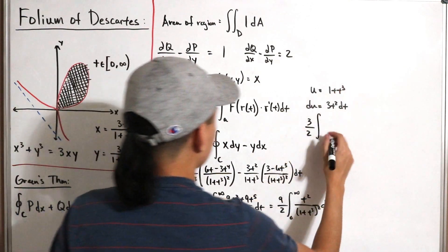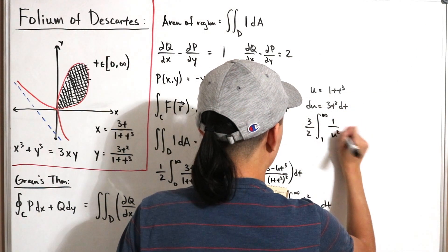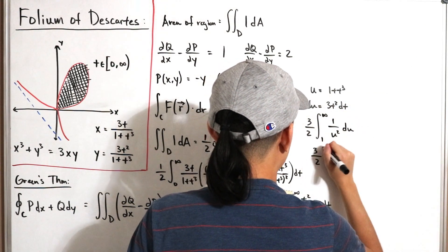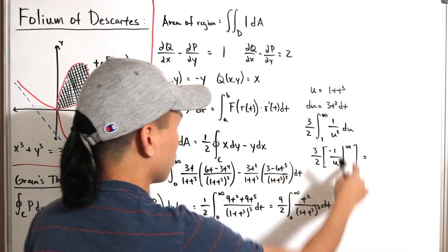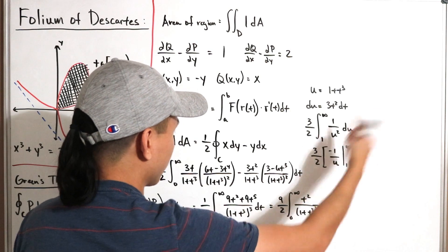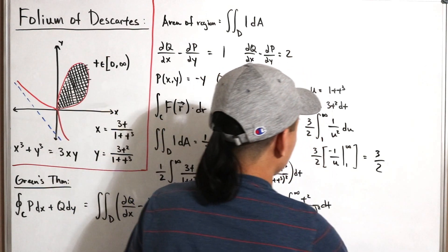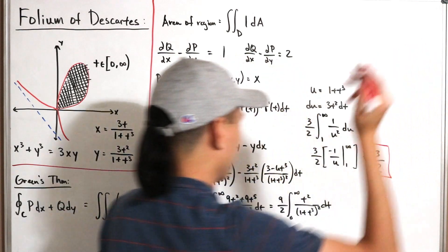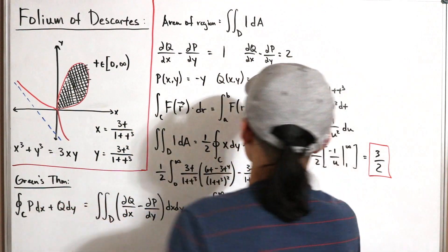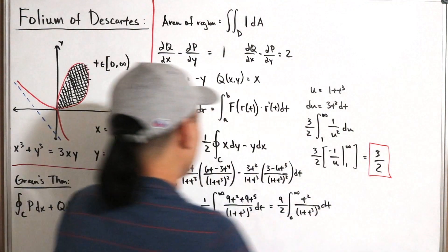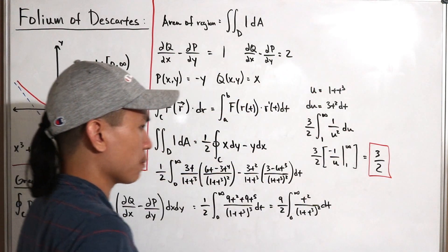We apply u-substitution: let u = 1 + t³, so du = 3t² dt, meaning t² dt = du/3. Thus 9/2 · (1/3) = 3/2. The new bounds are u = 1 to infinity. The integral becomes (3/2) ∫₁^∞ u⁻² du = (3/2)[−1/u]₁^∞ = (3/2)(0 − (−1)) = 3/2. Therefore, the area of the enclosed loop is 3/2.